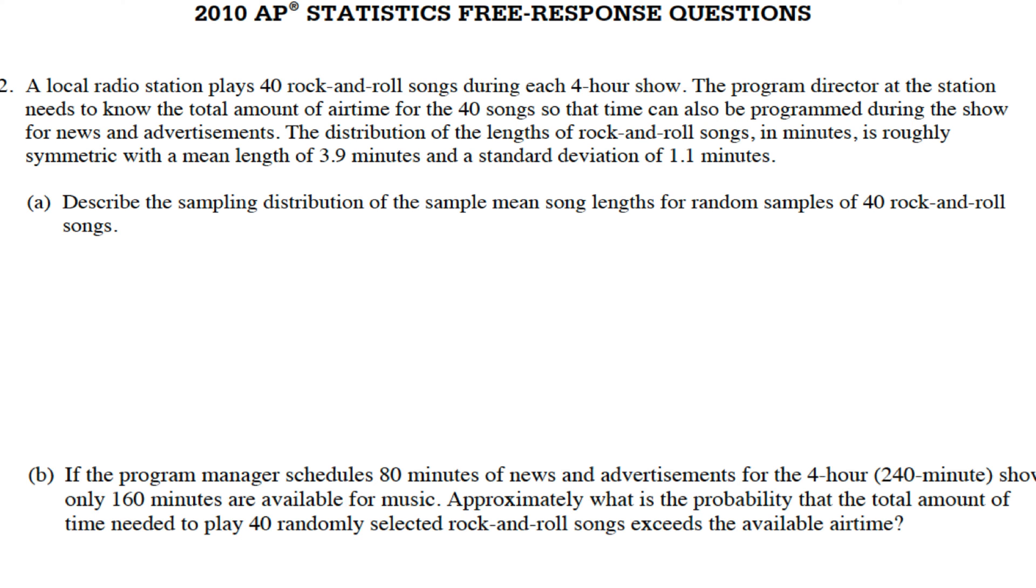Go ahead and take a second to read through this. Reading through it, we're taking a sample and then we're finding the mean, so it's a sample mean. We're gonna have a sampling distribution of means. We have 40 songs, and the mean is roughly 3.9 and a standard deviation that's from the population of songs is 1.1.